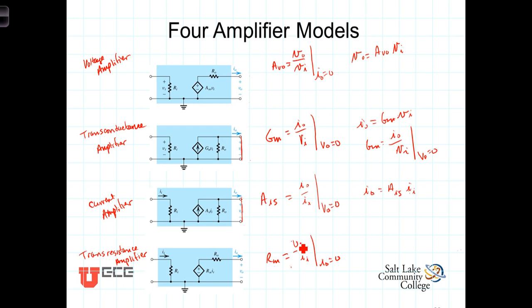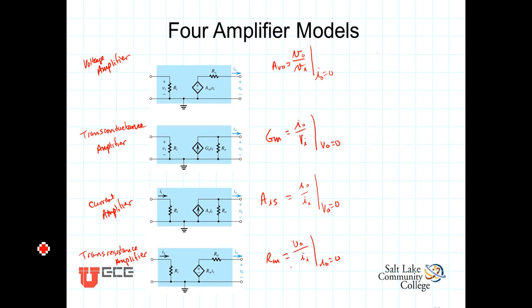The output voltage Vout is equal to R sub m times Iin for the case where Iout equals 0. There is no voltage drop across the output resistance, so the output voltage is simply R sub m times Iin. As mentioned, these four models are all equivalent, which means we should get the same open-circuit voltage and the same short-circuit current expressions for any of them.